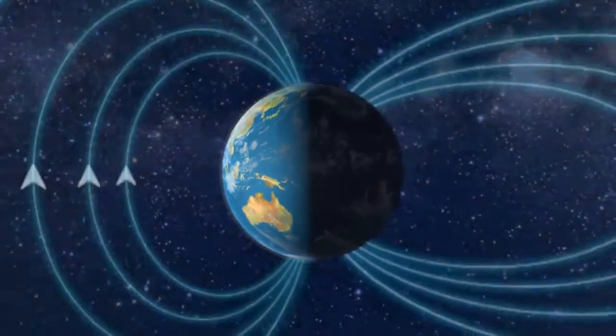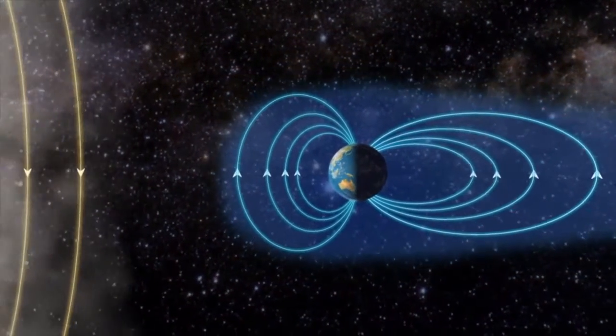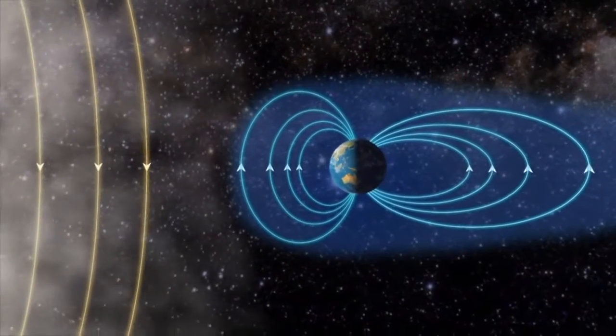When the solar storm reaches our planet, something strange happens. An invisible shield, the Earth's magnetic field, deflects the storm.